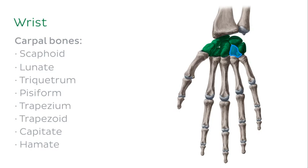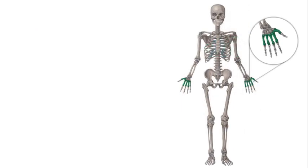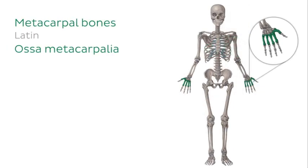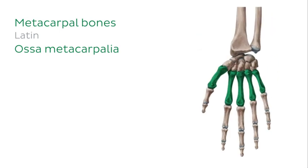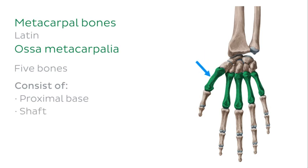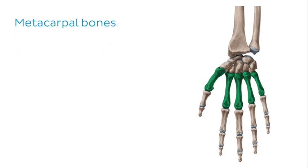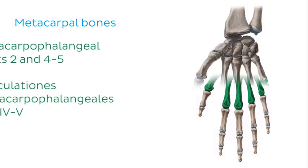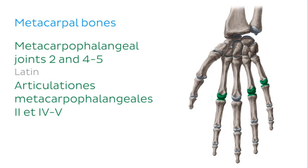Some of the bones of the wrist form articulations with the metacarpal bones. The metacarpal bones are the next row of bones in the hand after the carpals. There are five metacarpal bones which consist of a proximal base, a shaft and a distal head. The distal head of each metacarpal bone forms an articulation with the phalanges of the hand, forming the metacarpal phalangeal joints.